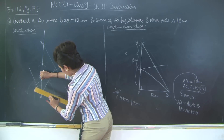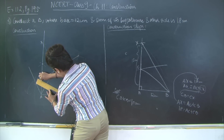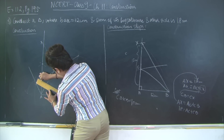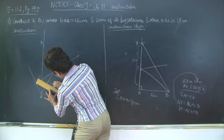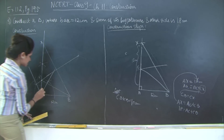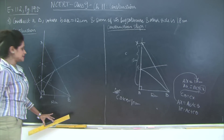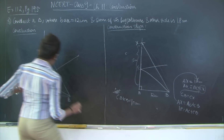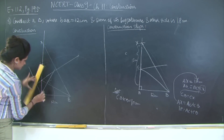Therefore triangle ABC is my required triangle, where the sum AC plus CB equals 18 centimeters, the base AB is 12 centimeters, and angle A is 90 degrees. Let me highlight triangle ABC again for you.